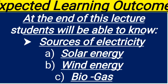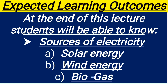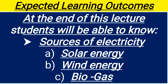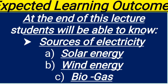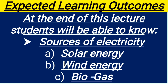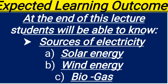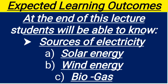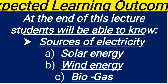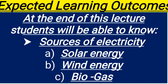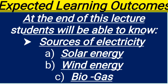In thermal power stations, fuels such as coal, oil, and gas are burned to produce steam, which is used to generate electricity. Nuclear power plants produce heat energy from atoms, which is then used to generate electricity. Today we move on to solar electricity, wind energy, and biogas.